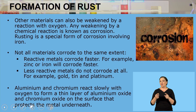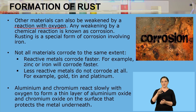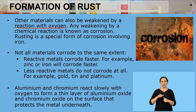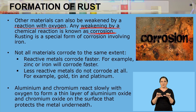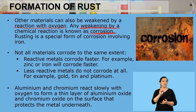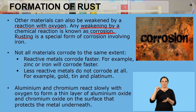Other materials can also be weakened by reaction with oxygen — it's not only iron. Any weakening of a substance by oxygen is called corrosion. Corrosion is weakening by chemical reaction. Rusting is a special form of corrosion that specifically involves iron, whereas weakening of other metals is referred to simply as corrosion.